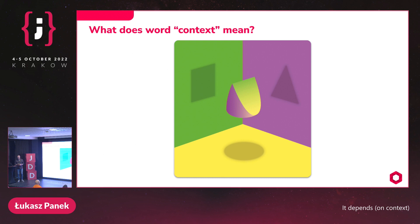What can we see on this picture? There is a 3D object in the center and, depending on the wall, it casts three completely different shadows: rectangle, triangle, and a circle. We may say that depending on a perspective, we can interpret and understand this object completely differently.